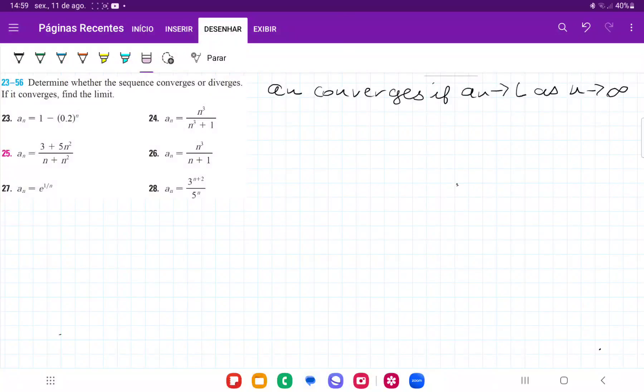So for number 28, we want to see if this sequence over here converges. And now, a sequence converges if a_n tends to a limit as n approaches infinity.